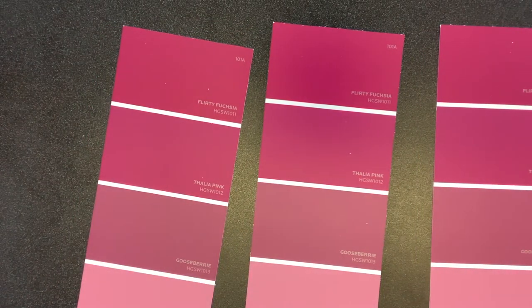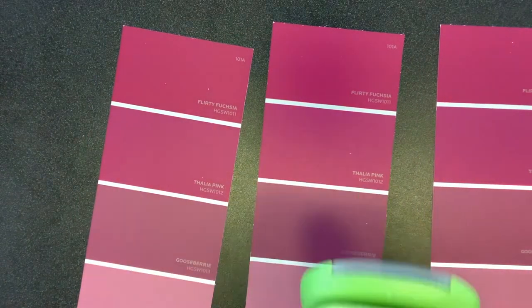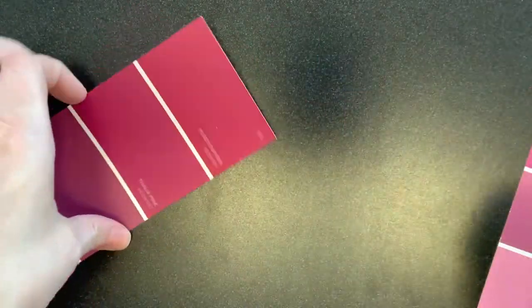Next, just punch out your shapes. I have three of the same paint chip and I'm going to punch a heart out of each section to make a total of 12 hearts. You can always hand cut your shapes if you don't have a paper punch in the shape that you want.